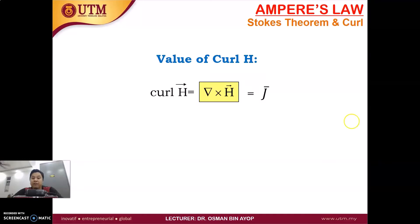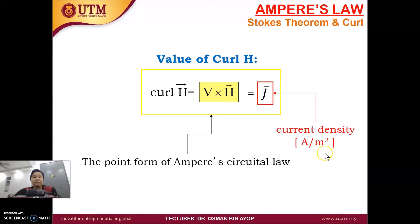Value of curl H. The curl H is basically equal to J, the current density. The unit is ampere per meter squared. This is what we call the point form of Ampere's circuit law. We have the integration form and the point form. This is what we call the point form.